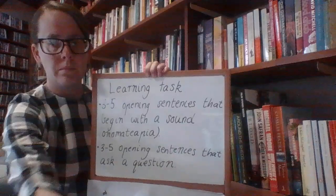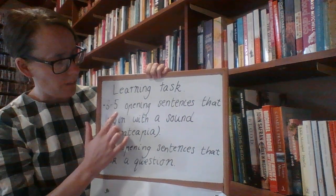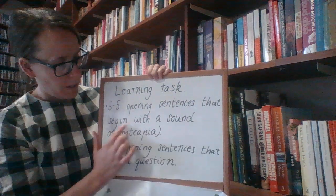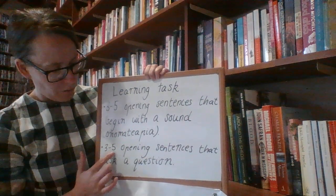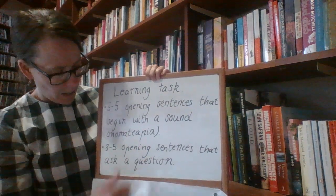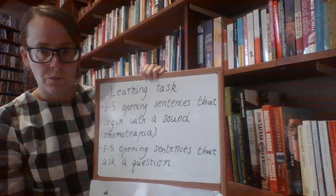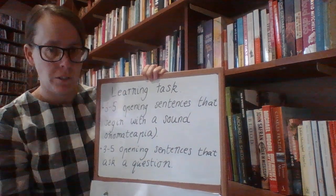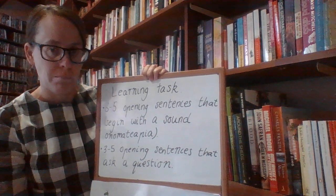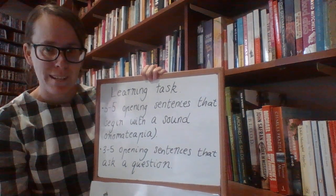I'll write that up on the board so mums and dads can remember. Our learning task for today is for kids to write three to five opening sentences that begin with a sound — what we call onomatopoeia — and three to five opening sentences that ask a question. This is a great way for kids to practise writing some really good openers, and then in the future we might choose one of them to turn into a really fantastic descriptive piece of writing. So have fun with it — you can be a bit silly, use your imagination, and I look forward to seeing what everybody produces.